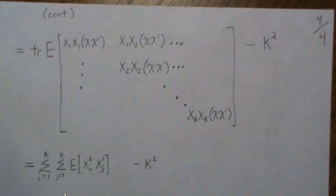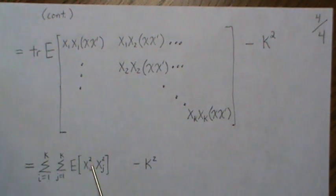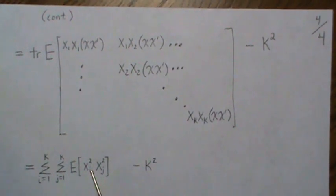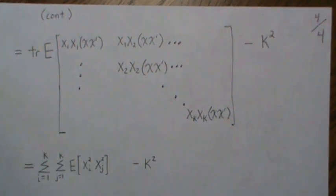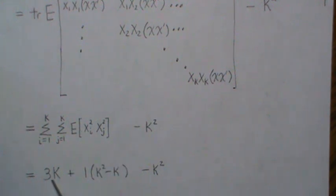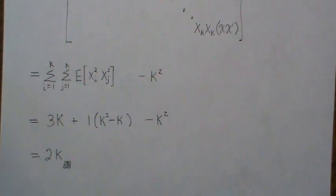Taking the expected value: when i equals j we get E[xi⁴] = 3, which happens k times along the diagonal. The remaining k²−k off-diagonal cases give E[xi²xj²] = 1. So the trace sum is 3k + (k²−k)·1 = k² + 2k. Subtracting k² gives 2k, and that's exactly the correct variance for a chi-squared with k degrees of freedom.